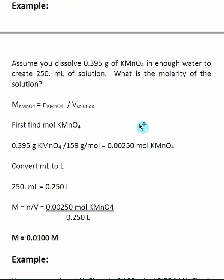Two common examples. The first is to calculate the molarity of a given solution. Here, I take a certain quantity of potassium permanganate and I add enough water to create a 250 milliliter solution. Notice I didn't say I added 250 milliliters of solvent — the wording in chemistry is very important.